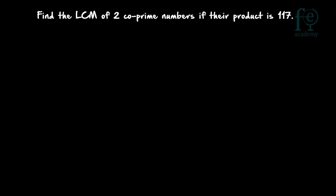Hi friends, welcome to today's class. Today's question is: find the LCM of 2 co-prime numbers if their product is 117. You have to find out the LCM of 2 co-prime numbers, and the product of the numbers is given as 117.